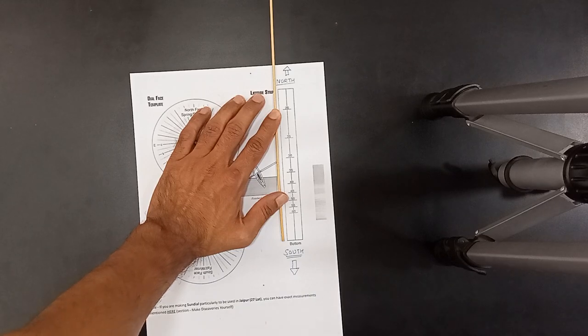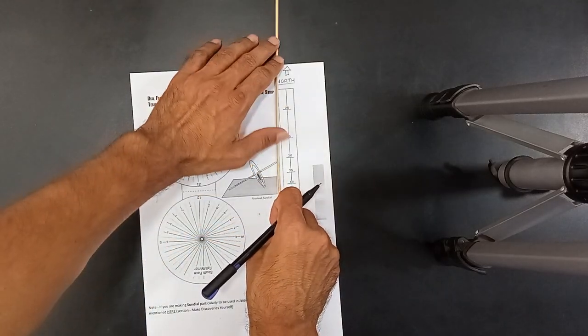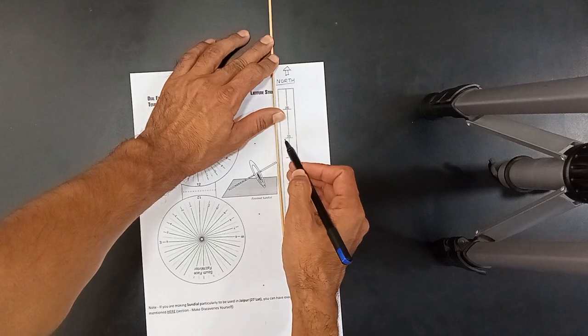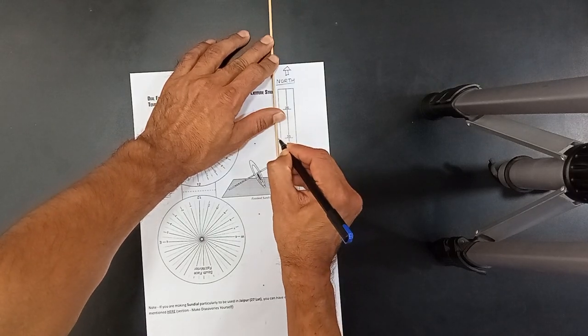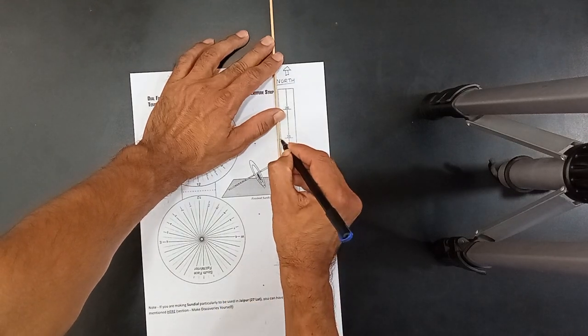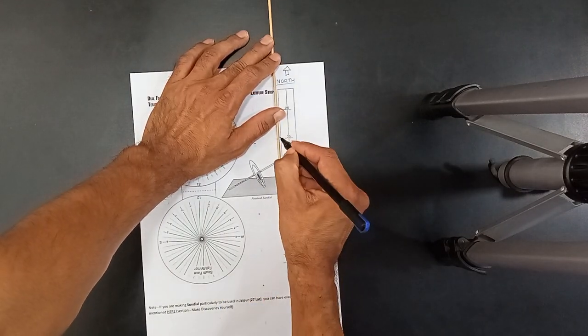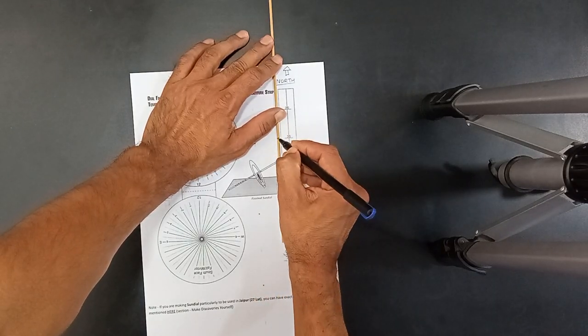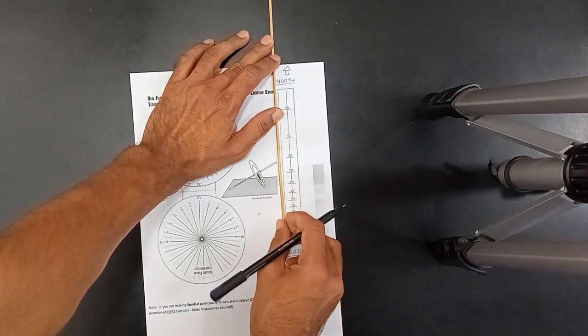Now suppose your place's latitude angle is 25, so mark this stick over here with a sketch pen or a marker, whatever you have. Mark it like this.